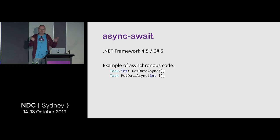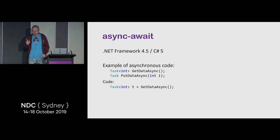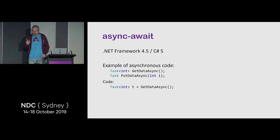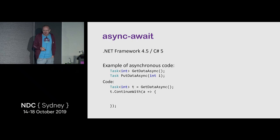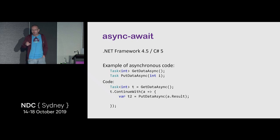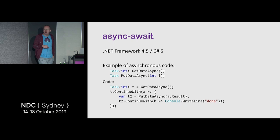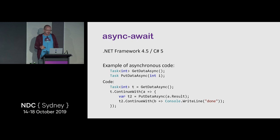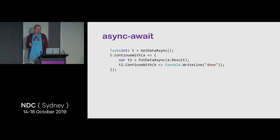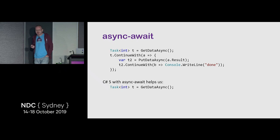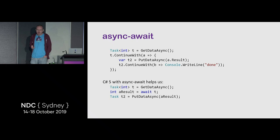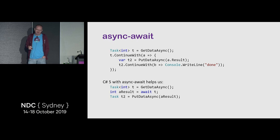With Task's ContinueWith, you'd call GetDataAsync, hook up a continuation, take the result and call PutDataAsync, then print 'done' after. Obviously you don't want to write code like that. With async/await, you call GetDataAsync, get a Task<T>, await the task, get the result, then await PutDataAsync. After that, write your done message. Fairly simple — and the code above is roughly what the compiler generates for you.